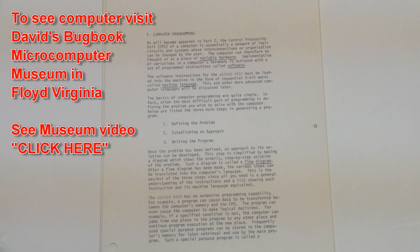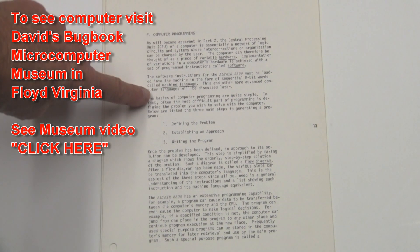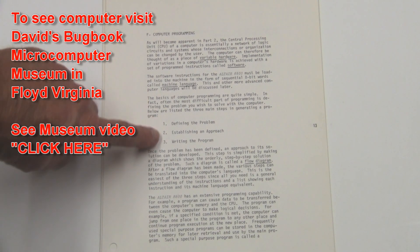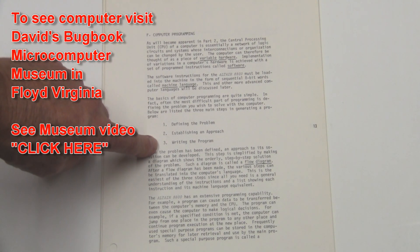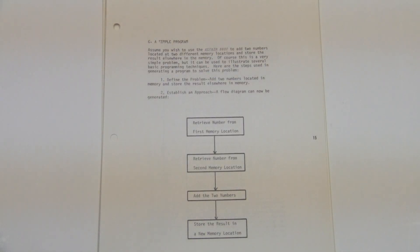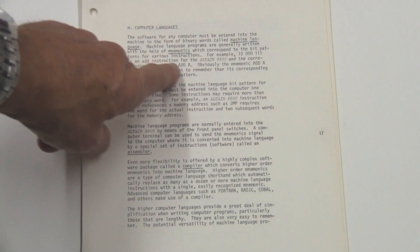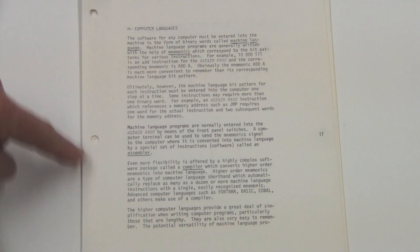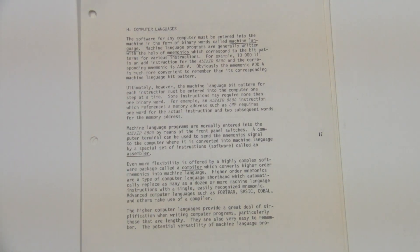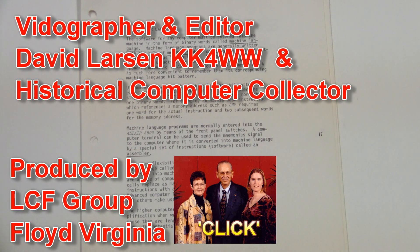Like I said, it's pretty brief. Computer programming talks about machine language programming — how to do that: define the program, establish the approach, write the program. That's pretty basic. Here we go — writing a simple program: assume you want to add two numbers located in two different memory locations; here's a little flowchart to do that. A little discussion of computer languages: machine language, which can be represented as mnemonics or binary; assembler languages, which allow you to write at a slightly higher level and then assemble it back into binary; or compiler languages such as Fortran, Basic, COBOL, and others. So it's a little bit of history and background throughout the whole manual.